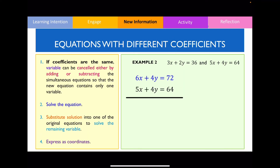Now that the coefficients are the same, it follows the exact same steps as the first example. We either add or subtract — in this case, to cancel out the 4y terms, we subtract both equations. By subtracting: 6x minus 5x equals 1x, and 72 minus 64 equals 8. So therefore x equals 8. We've now completed steps one and two. Next, we substitute that answer back into one of the original equations.